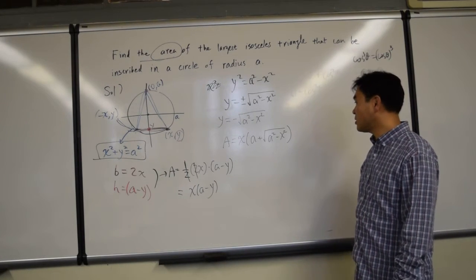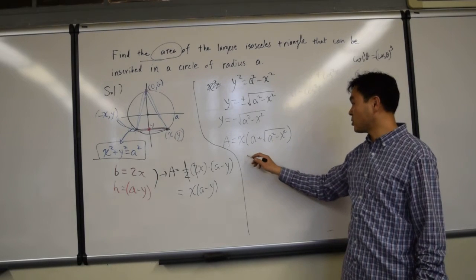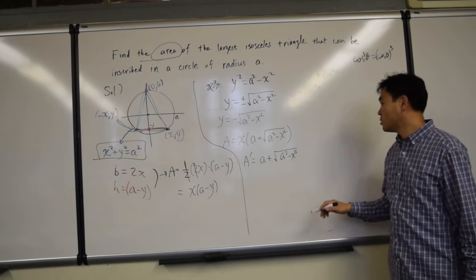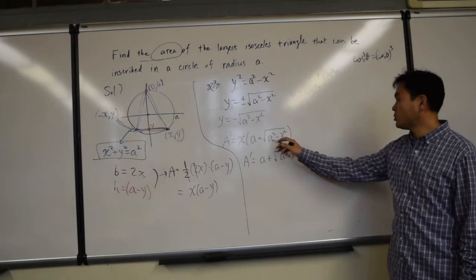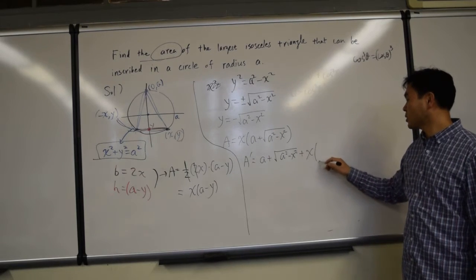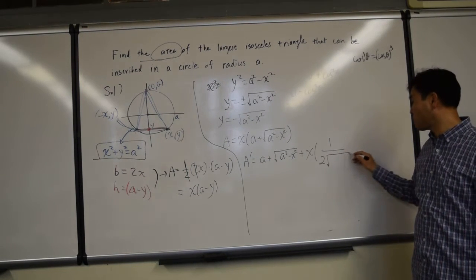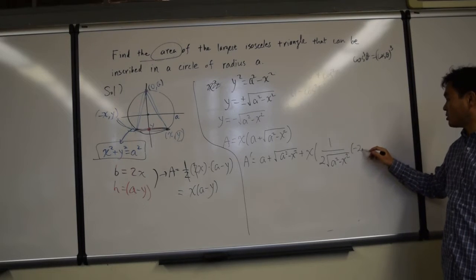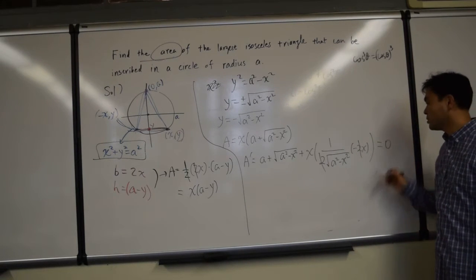And then we plug that in here and we get the area equal to x times a minus negative of this thing. So it's a plus square root of a squared minus x squared. Now, let's try to differentiate this. To differentiate this, we have to use product rule because it's a product of two functions. So a prime is a plus square root of a squared minus x squared. Plus, then when you differentiate the second part, it's one over... If you differentiate the square root, it's one over two times square root of whatever that's inside. But then, we have to use the chain rule, so this function comes out and you have to differentiate which is negative two x.